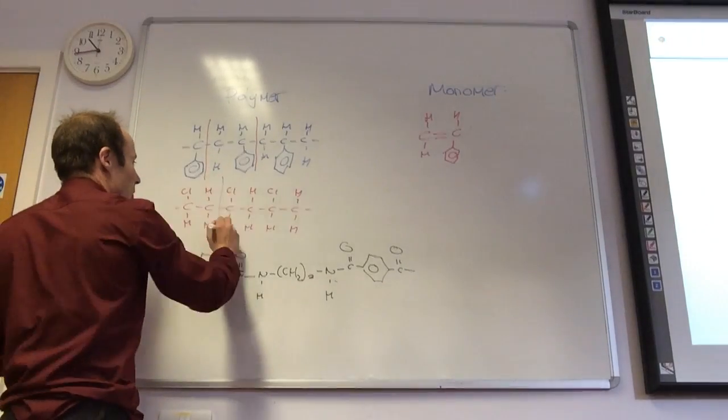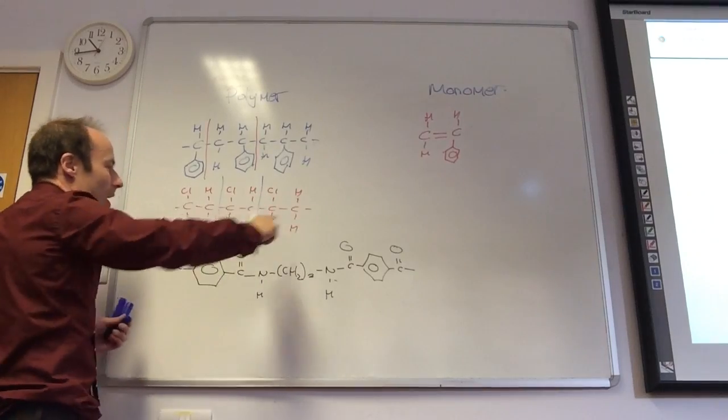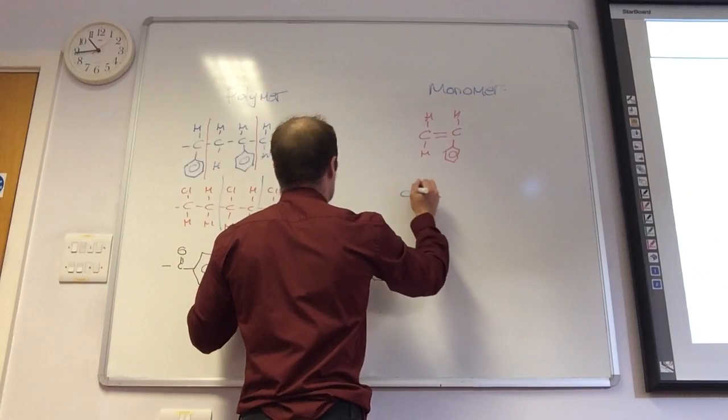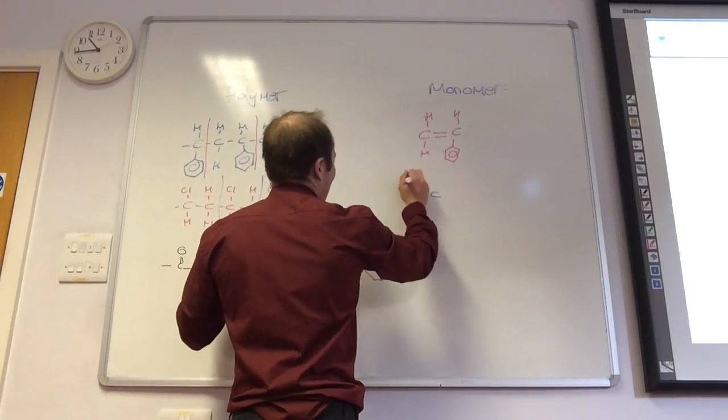Right, same as here, that's your repeat unit that's going through, carbon chain all joined together. No, you've done that wrong. It's chlorine, not hydrogen.